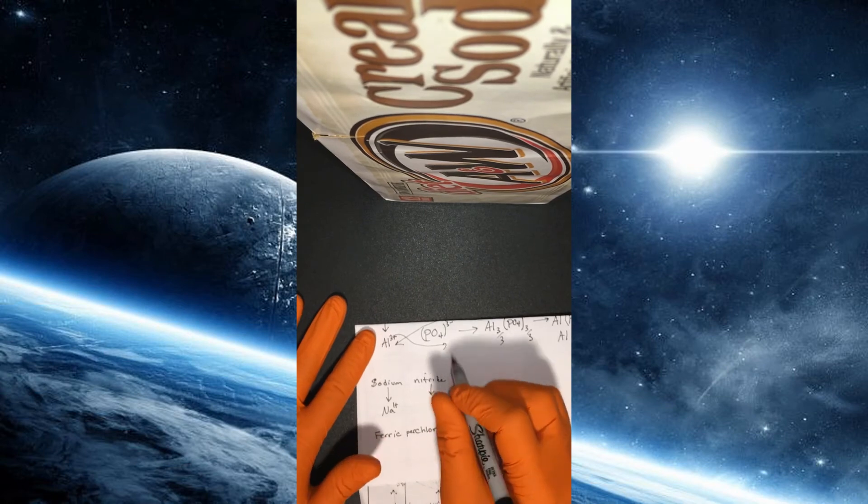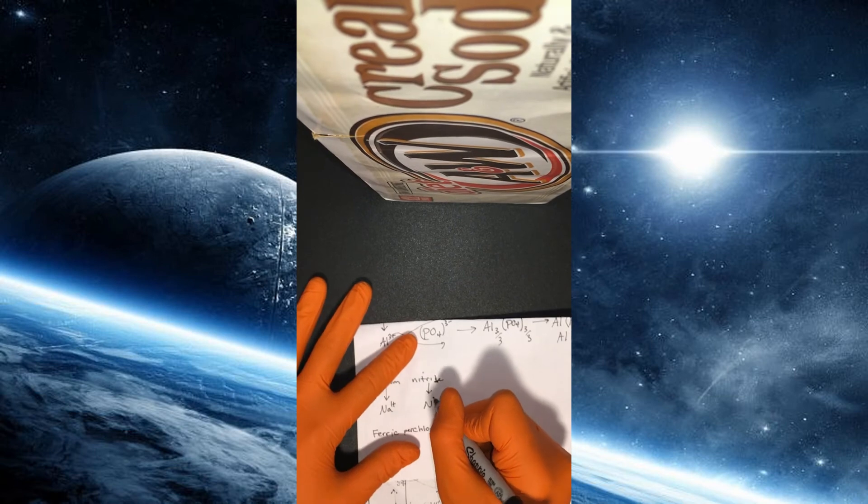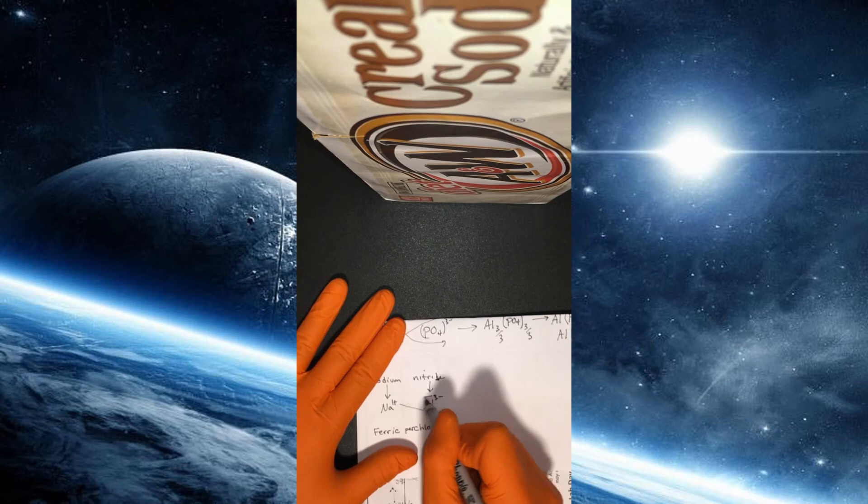So sodium is in group one. It has a plus one charge. Nitride, not nitrate or nitrite. It's nitride with a D. This is a nitrogen with a three minus charge.